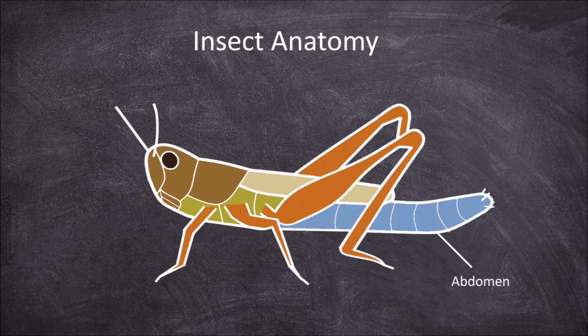The abdomen consists of a differing number of segments, up to 11 segments. Only the last segment bears appendages.